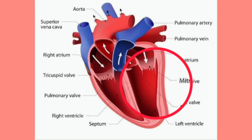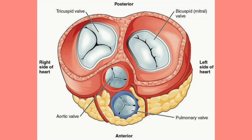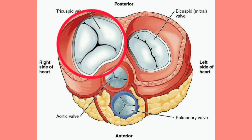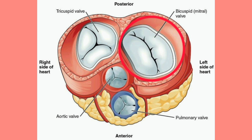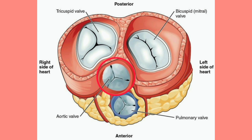The heart contains four valves. The tricuspid valve is located between the right atrium and the right ventricle. The pulmonary valve is a semilunar valve between the right ventricle and the pulmonary trunk. The mitral valve is located between the left atrium and the left ventricle. The aortic valve is a semilunar valve between the left ventricle and the aorta.